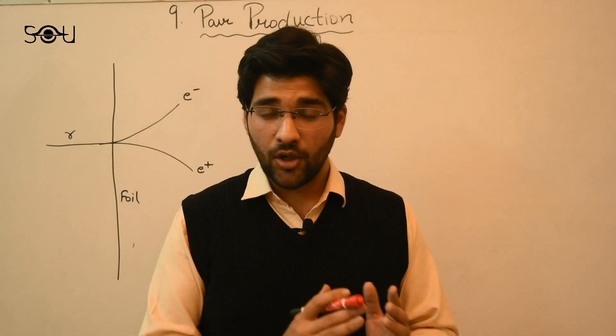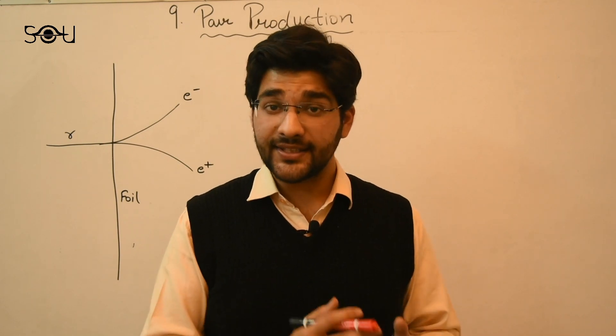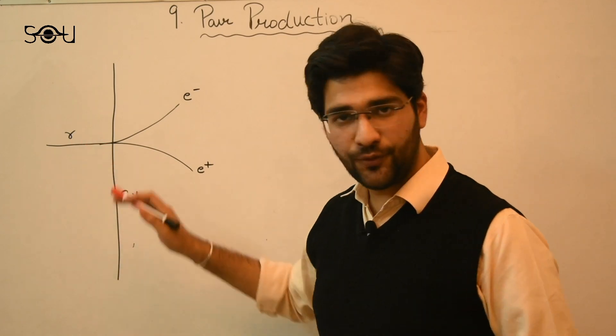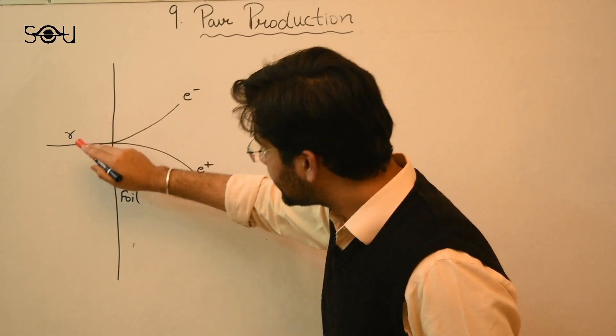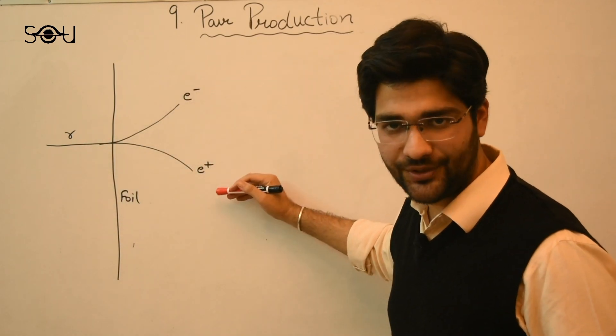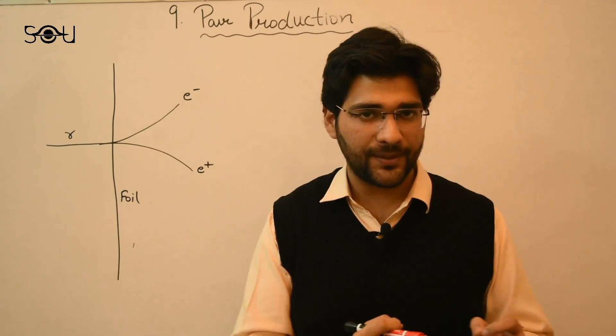Four years after Paul Dirac gave his theory of antimatter, Karl Anderson discovered it experimentally. So when highly energetic photons, gamma ray photons, pass through a foil, gamma ray photons disappear creating an electron and a positron. This process or this phenomena is known as pair production.